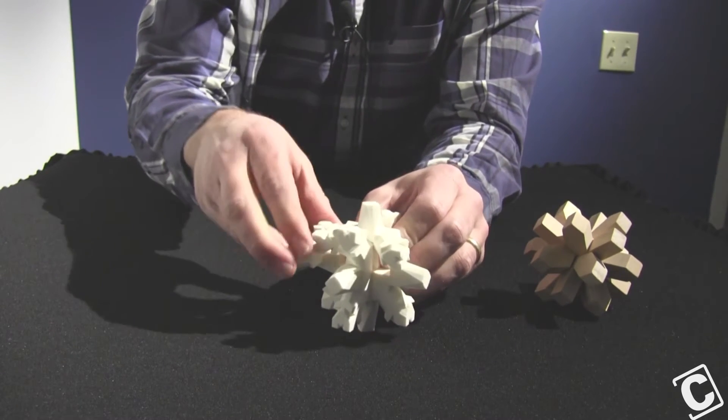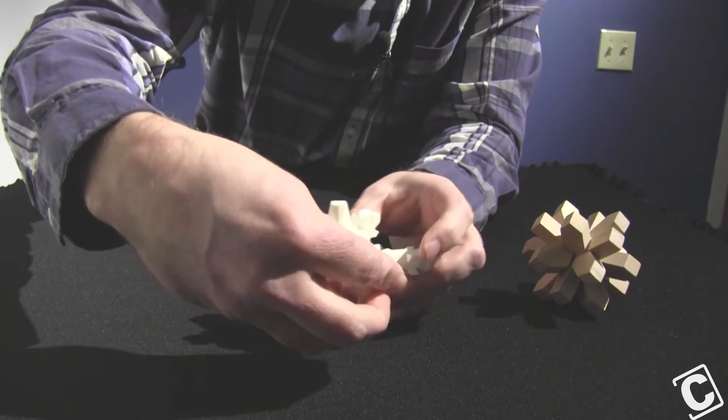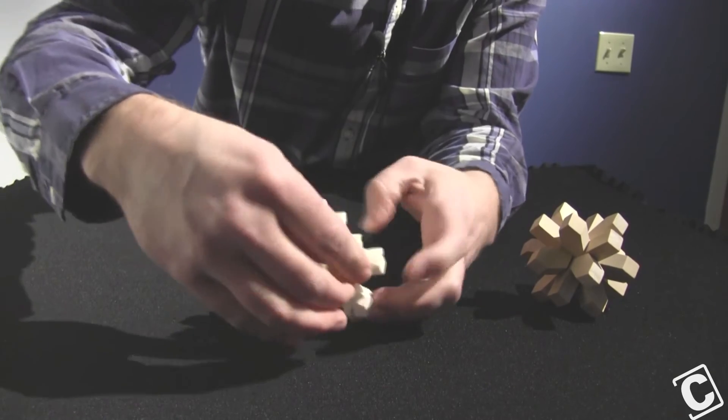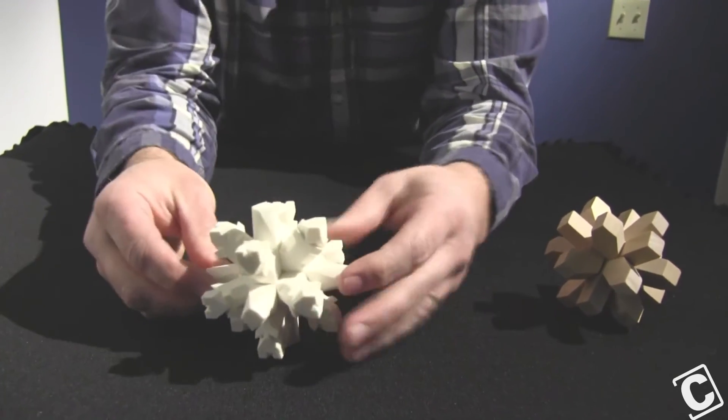One, two, and then just rotate the magic piece around and it's all good. Nice and sturdy, much better than my little prototype there.